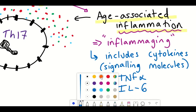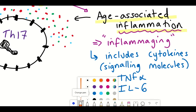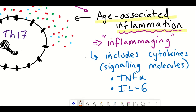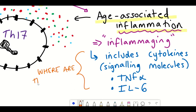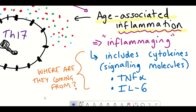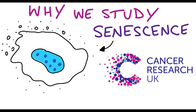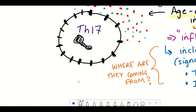One of the hallmarks of aging associated with these diseases is inflammation, sometimes referred to as inflammaging. This generally refers to cytokines secreted within the body, such as TNF-alpha and interleukin-6, which seem to increase in abundance during aging. However, what is currently less understood is what causes this inflammation in the first place — where are these cytokines coming from? One source can be senescent cells, but another major source comes from T cells, which are a subset of immune cells within the body.